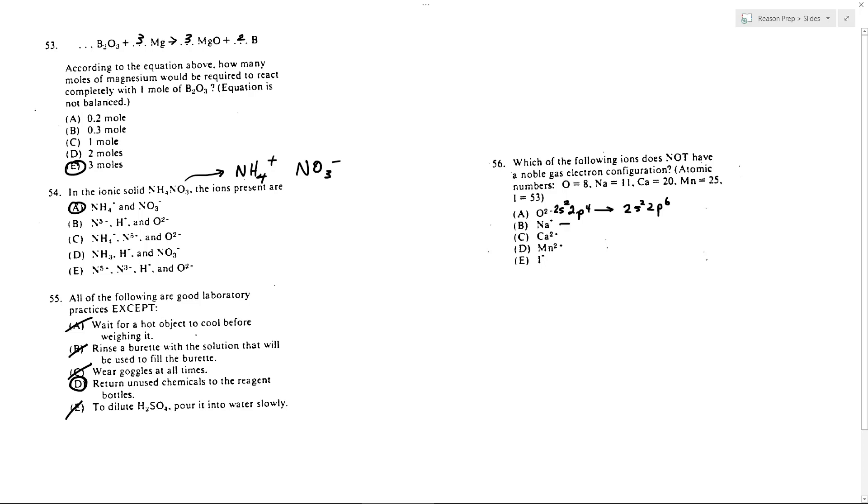Sodium is a 3s1 valence shell configuration, which if you remove an electron to make it positive becomes 2s2, 2p6, the same thing. Same thing with calcium. Calcium is 4s2. So if you remove its two electrons, it will become isoelectronic with argon. So we'll have noble gas configuration.